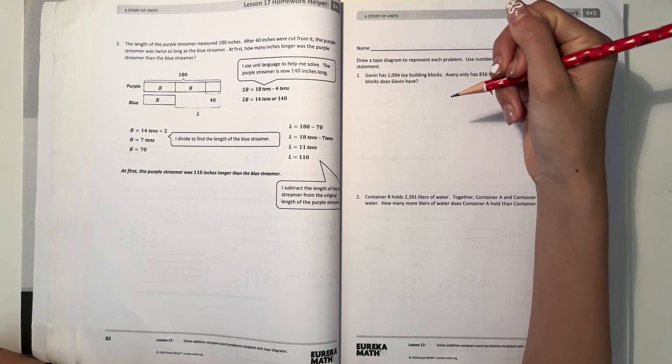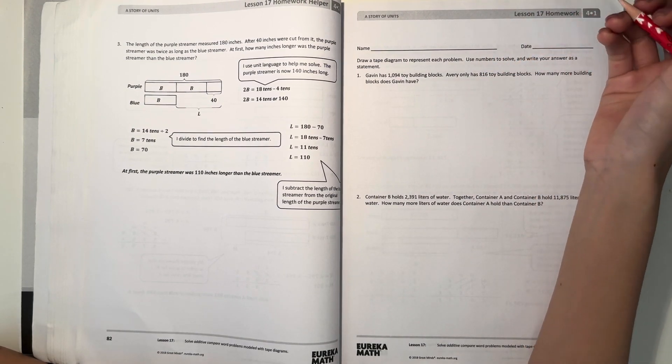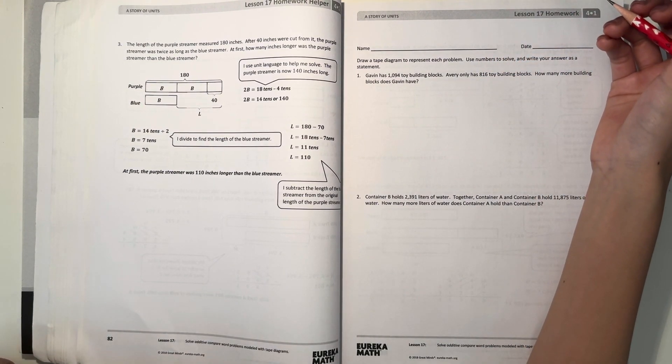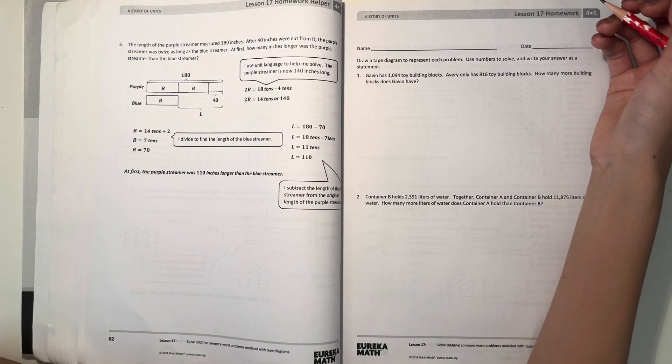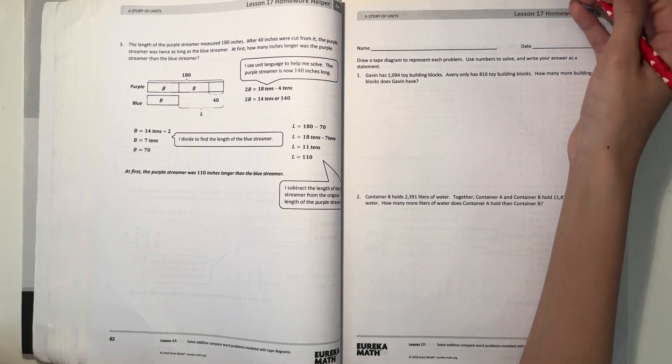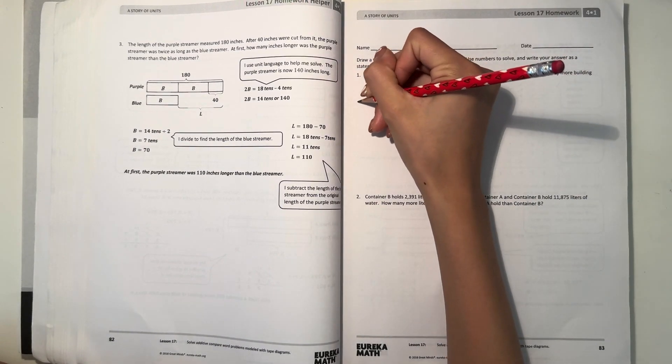Gavin has 1094 toy blocks. Avery only has 816 toy building blocks. How many more building blocks does Gavin have? So let's make a tape diagram,